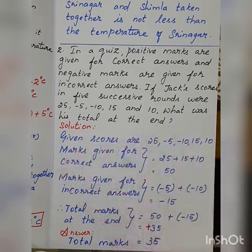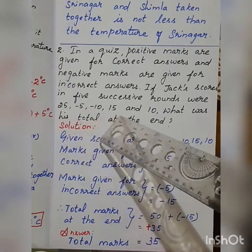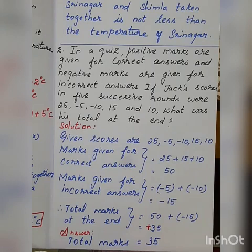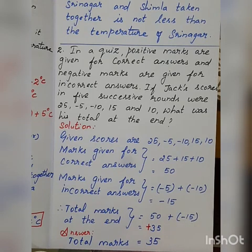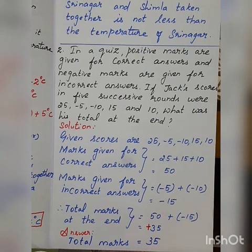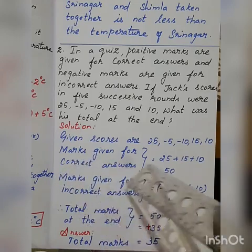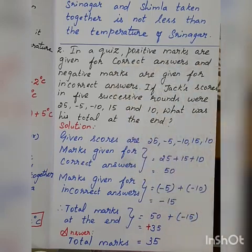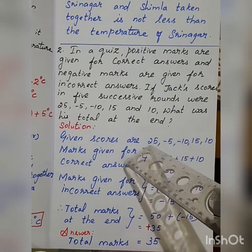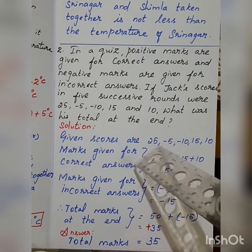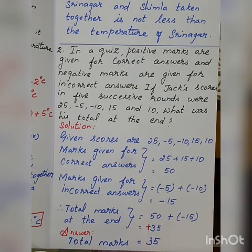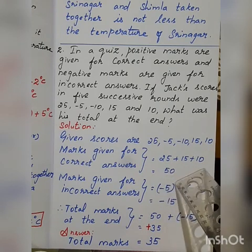Solution: the given scores are 25, minus 5, minus 10, 15, and 10. First we calculate the correct answers and then calculate the incorrect answer. We add the corrected answer marks, then add the incorrect answer marks, and finally total them. The positive marks are for correct answers. So the correct answer marks are 25, 15, and 10 — these three marks are correct answer marks. Add these three: the answer is 50.